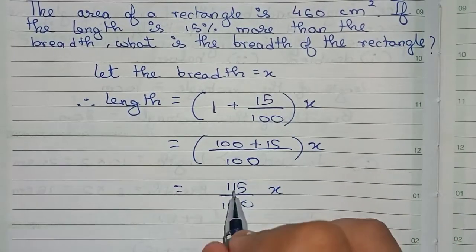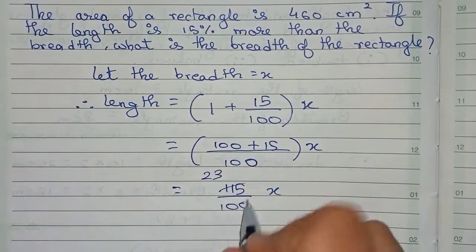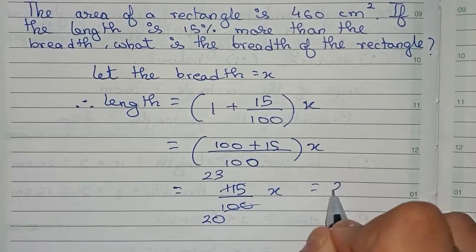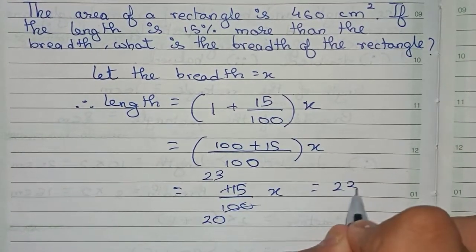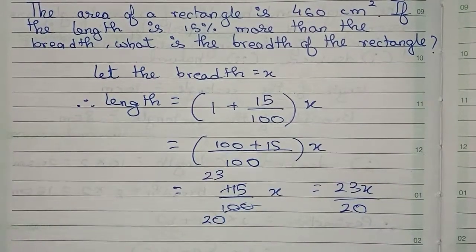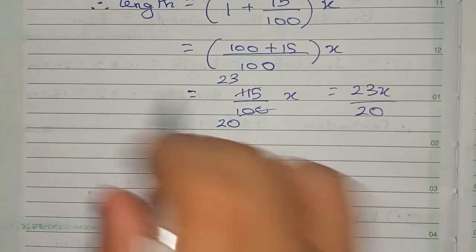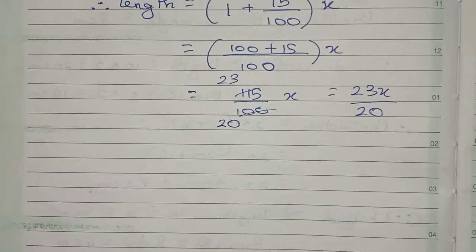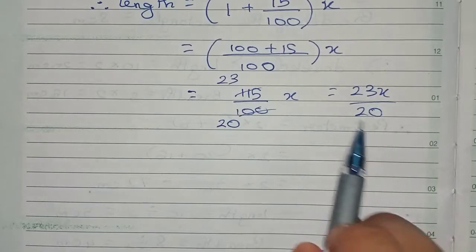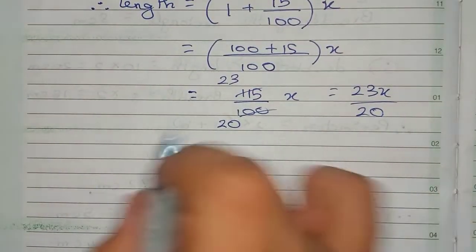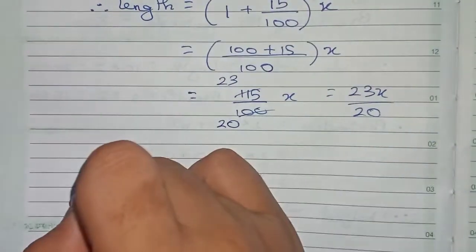We simplify: cutting by 5, 115 becomes 23 and 100 becomes 20. So our length becomes 23x by 20. Now we know that area equals length into breadth, so that means 23x by 20 into x equals 460 centimeters squared.